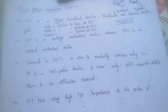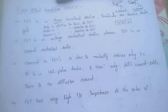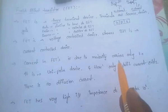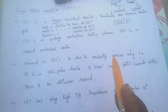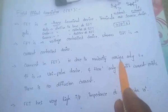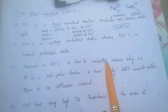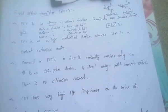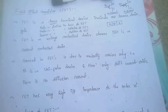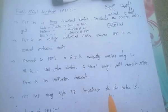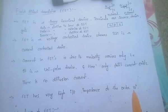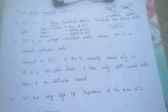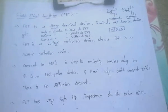Current in FET is due to Majority Carriers only. That's why it is called a Unipolar Device. Here only Drift Current exists; there is no Diffusion Current. FET has very high input impedance of the order of 10 power 6 Ohms.